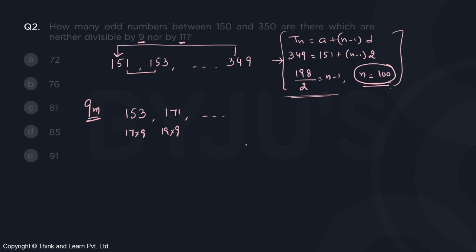Just keep that in mind which is 171 and that way it would go on. So what is the last number which is divisible by 9? 342 is an even number, so the last number is 333 and 333 is 9 into 37. So you can roughly count these numbers.